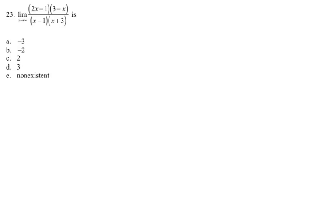So let's take a look at this. It says find the limit as x approaches infinity of the quantity 2x minus 1 times the quantity 3 minus x, over the quantity x minus 1 times the quantity x plus 3. We need to find the limit going to infinity, which is a really important distinction. I'm going to expand.